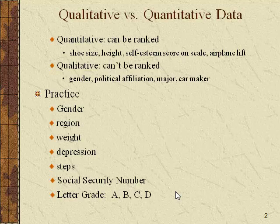The last two are a little tricky. Social Security number would be qualitative even though it's a set of numbers, because they're not used quantitatively — they're just different labels, like names. Letter grades A, B, C, and D are letters, but they lie on top of a numeric system — typically 100% to 90% is an A, 80% down to 70% is a B, etc.